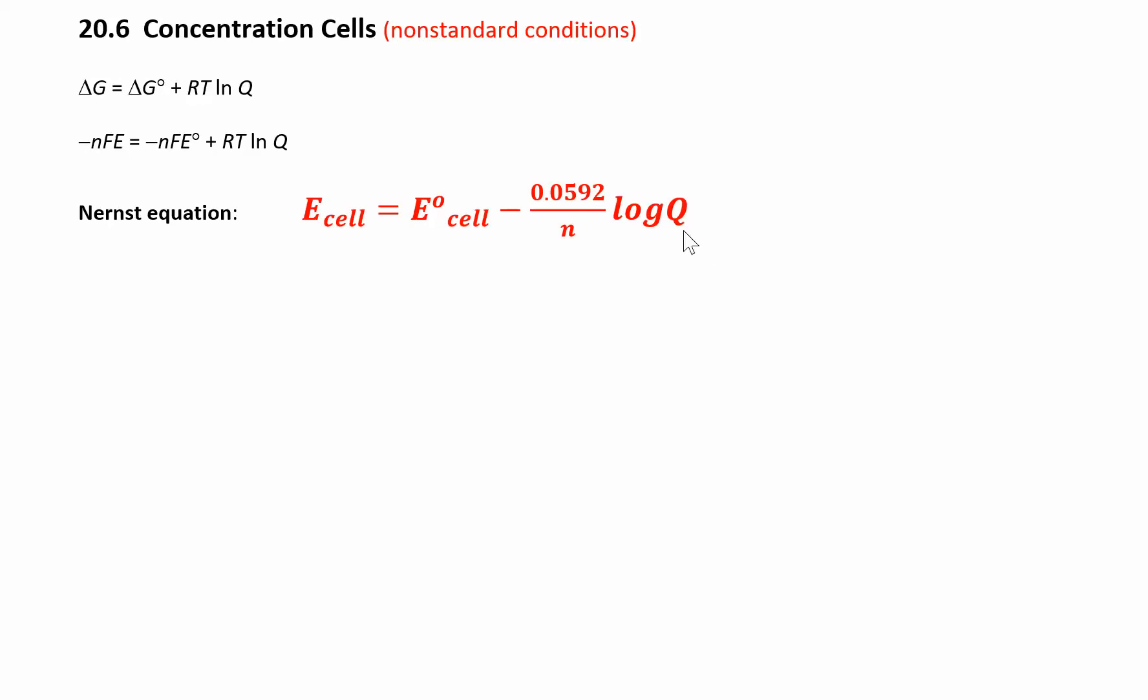So remember how we find Q. Q is like products over reactants raised to the stoichiometric coefficients. We looked at Q in chapter 15, very similar to K. There's only one K, there's an infinite number of Q's. Q means you're not at equilibrium, K means you are at equilibrium. But you set up the expression pretty much the same way.